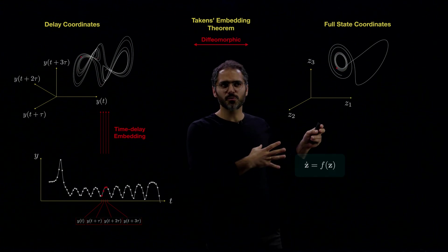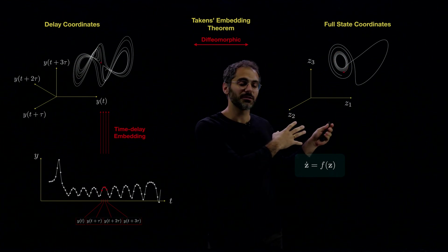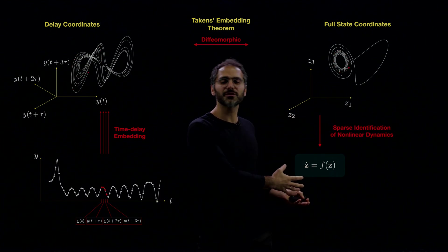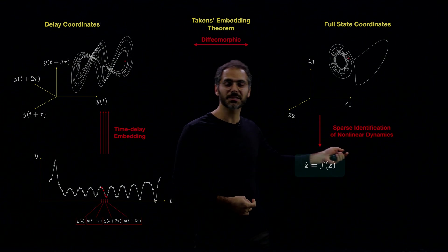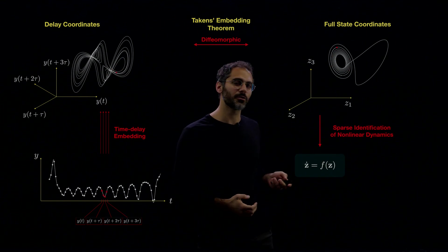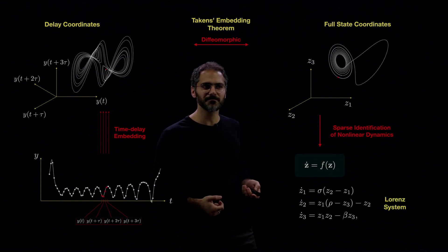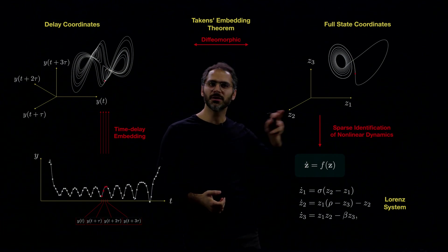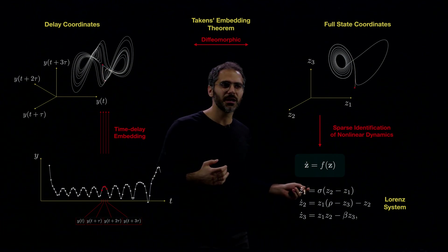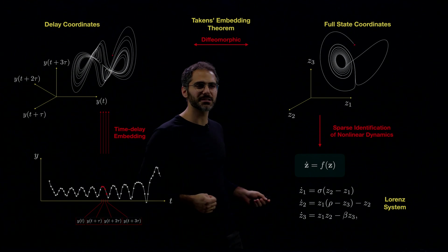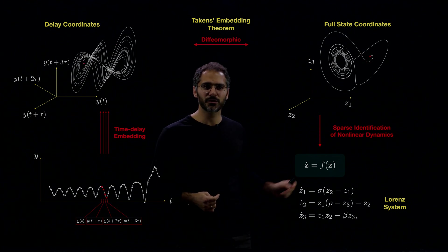We also know that given data in the full-state coordinates, we can discover the underlying dynamics using sparse identification of nonlinear dynamics, also known as SINDy. For example, in the example illustrated here, this is the Lorenz system. It's a three-dimensional system with three unknown parameters.